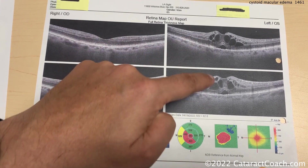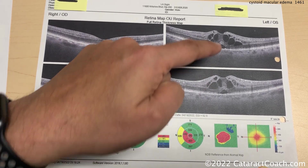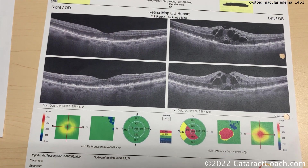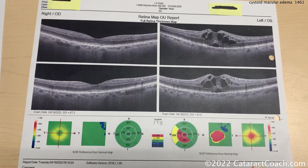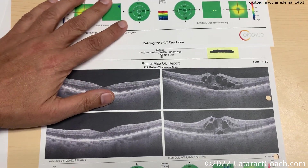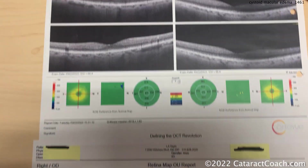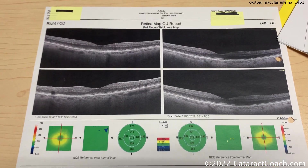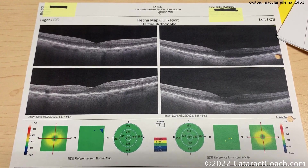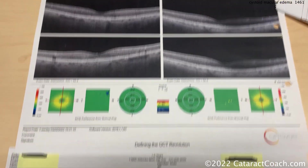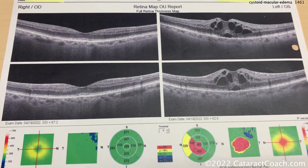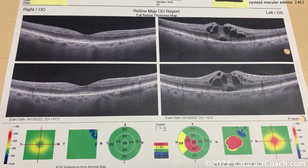Look at the pattern — cystoid macular edema. There are big cysts there. This is very common to see after cataract surgery if there are pre-existing risk factors: epiretinal membrane, bad diabetic, other problems. But this patient had none of that. Look at the before on that left eye — it looks totally healthy, totally normal. Nothing to be expected in the post-op period. The patient definitely got both topical steroids and NSAIDs in the post-op period and still had that swelling.